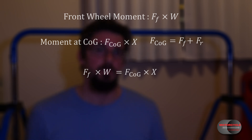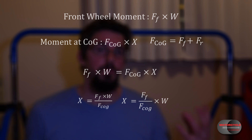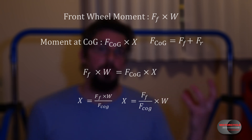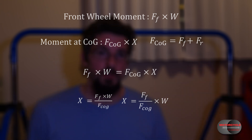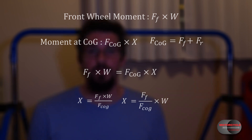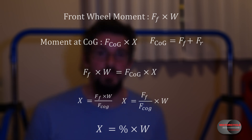That gives us x equals the force on the front of the bike times the wheelbase, divided by the total weight of the bike. We can remove the wheelbase from the fraction, giving us the weight on the front divided by the total weight, times the wheelbase. What that's actually saying is: you take the weight on the front of the bike, divide that by the total weight, and you have a percentage — your weight distribution. So your x position is directly related to your weight distribution.